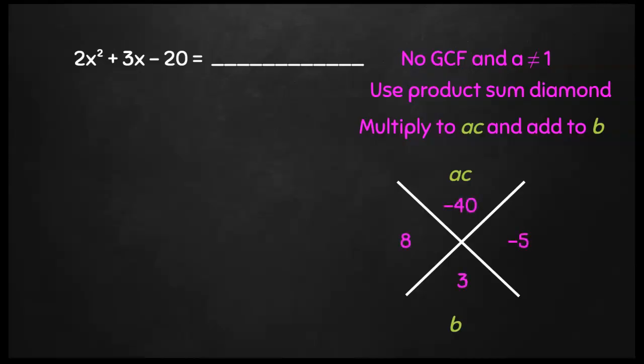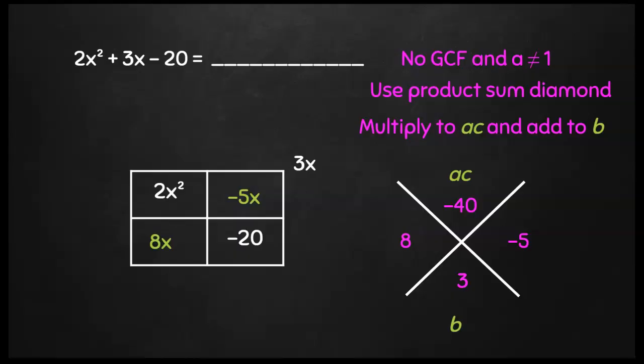When I figure out what two numbers will multiply to a times c and add to b, I'm going to get 8 and negative 5. Those are the numbers that are going to go inside my box. Now I have the 8x and that negative 5x inside my box. With my entire box filled out, it's going to make the outside of my box a lot easier to figure out.